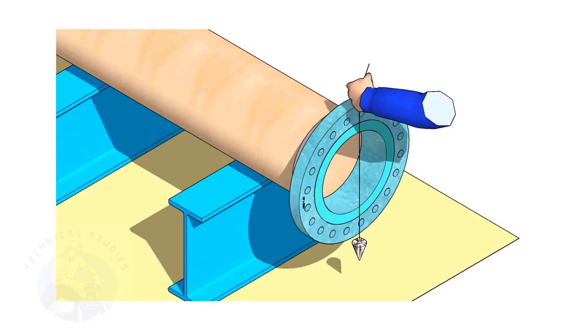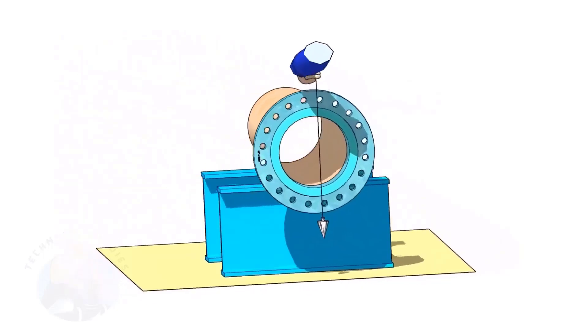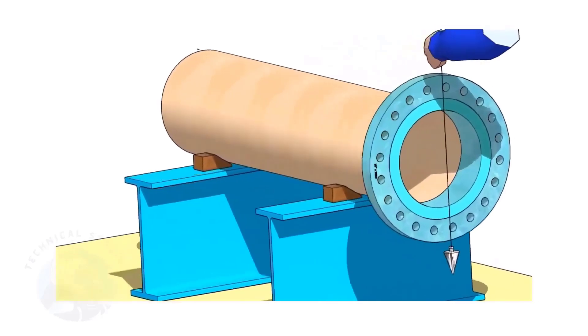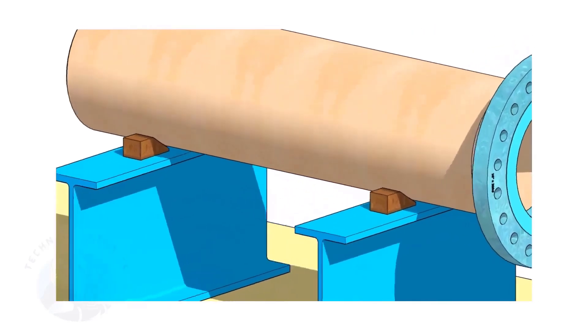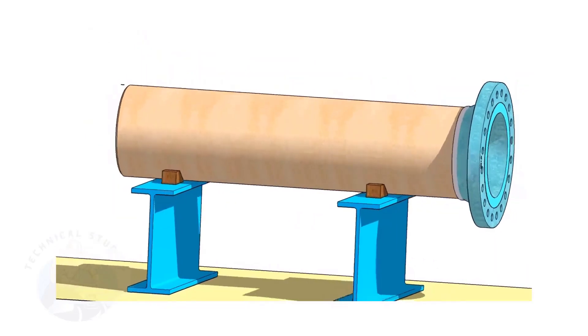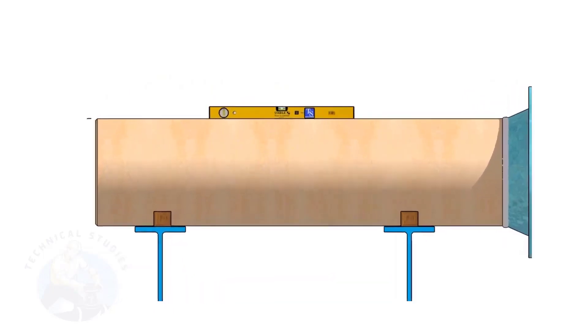Choose a set of holes closer to the center of the flange. This will ensure more accuracy. Provide proper supports on both sides of the pipe to prevent rotation. Correct the level of the pipe. Check the plumbness of the flange a second time.